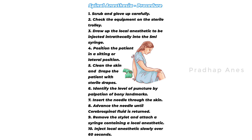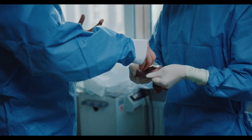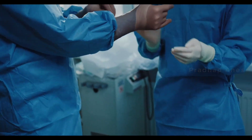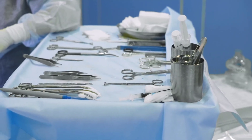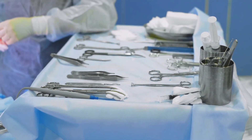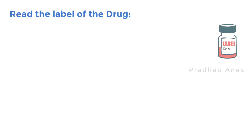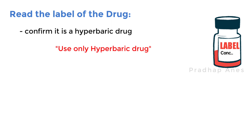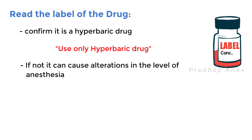Now we'll get into the steps for spinal anesthesia. Scrub and glove up carefully. Check the equipment on the sterile trolley. Read the label of the drug carefully, especially the concentration, and confirm whether it is a hyperbaric drug or not. Because in spinal anesthesia we should use only hyperbaric drugs — if not, it can cause alterations in the level of anesthesia.